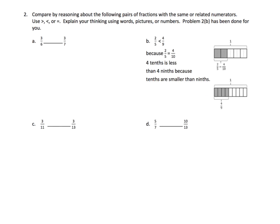Now we're going to take that same idea and make it a little more mathematical. When we can straight-up compare, we do so. Three-sixths versus three-sevenths — three-sixths is larger than three-sevenths because each individual sixth is a little bit larger than each individual seventh. Same concept here: we can immediately compare three-elevenths with three-thirteenths and see that three-elevenths is larger than three-thirteenths.